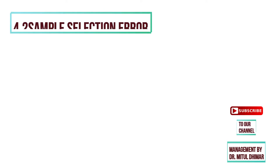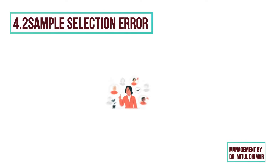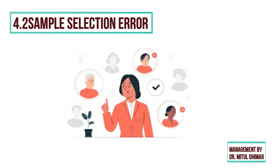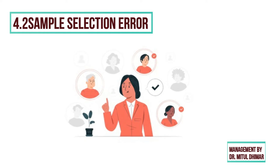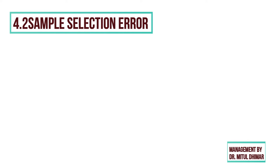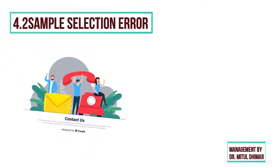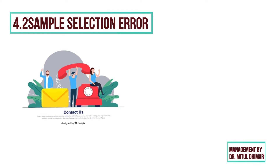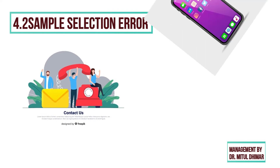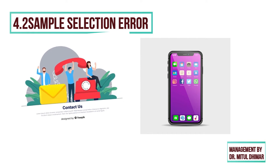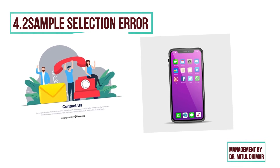Number 2: sample selection error. Sample selection error is a systematic error that results in an unrepresentative sample because of an error in either the sample design or the execution of the sampling procedure. For example, a firm that selects its sample from the phone book will have some systematic error because those people with only cell phones or with unlisted numbers are not included.